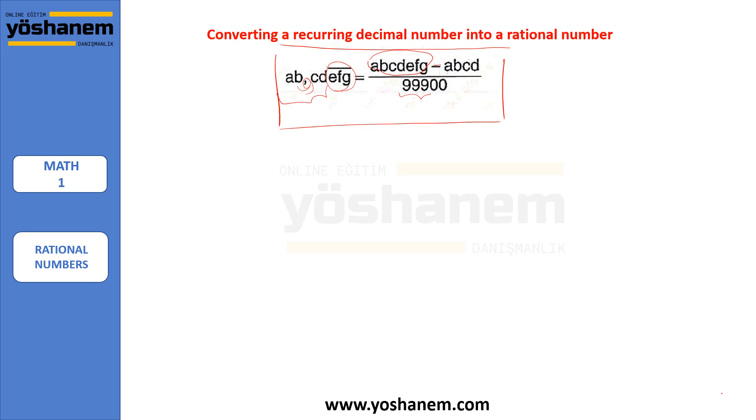And after the point, how many digits are not repeating? C, D. So two. Two zeros. I need to add next to 9. So let's give some examples to clarify the rule.